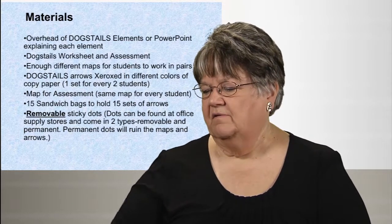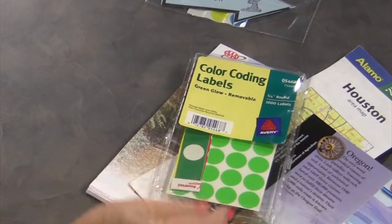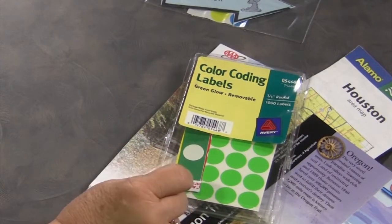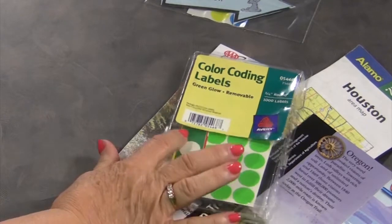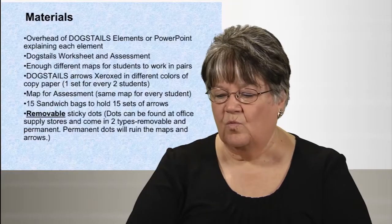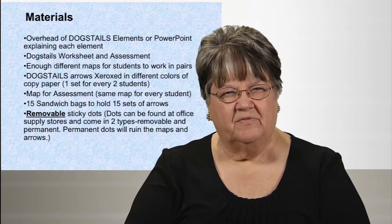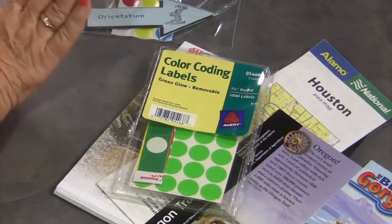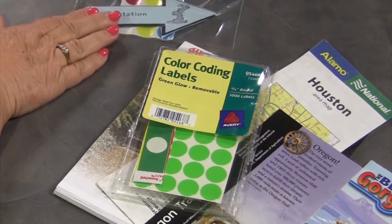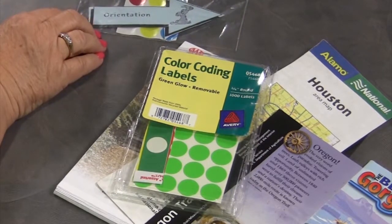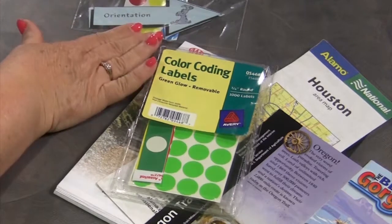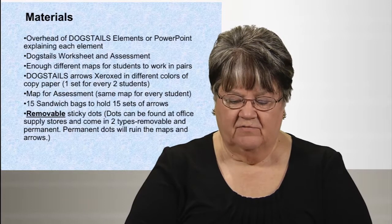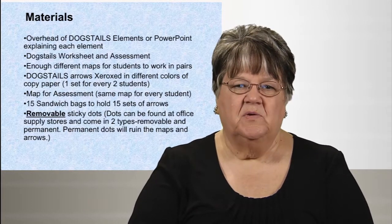Then you need sticky labels, and these labels need to be removable. It's important to have them removable because once students affix them to the map you don't want them to stick and ruin the maps. The third thing you need are baggies, and in the baggies you're going to put the arrows for Dog's Tales and the sticky dots. This lesson also comes with a variety of worksheets.